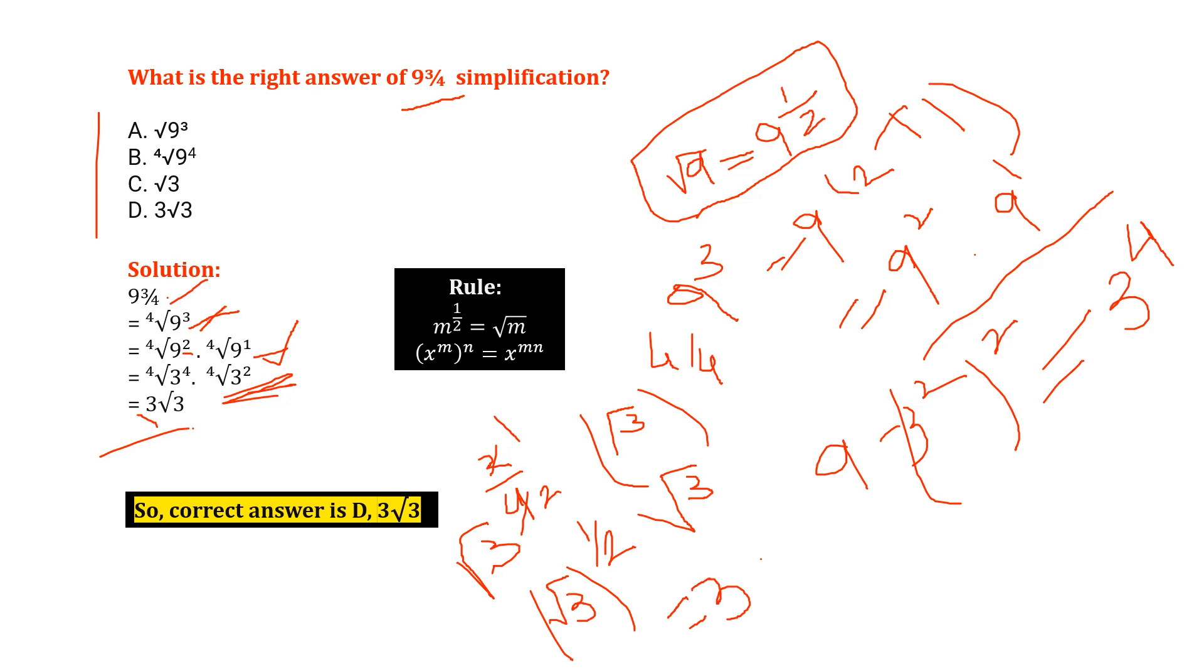So we got here 3 root 3. So now we see our options, we see option D, we have 3 root 3. So our answer is D, 3 root 3.